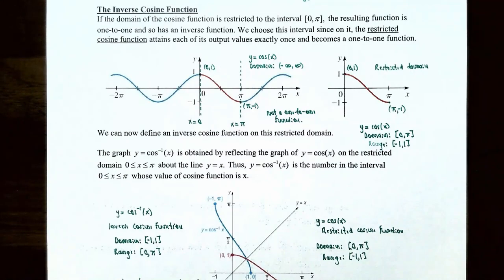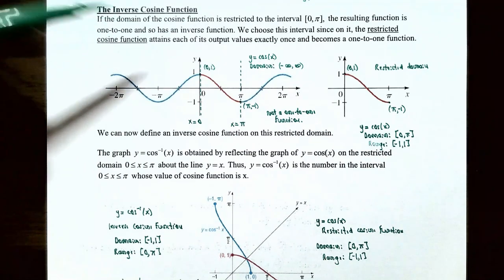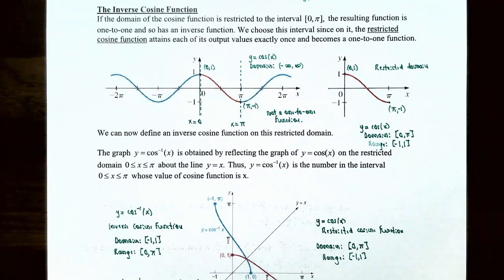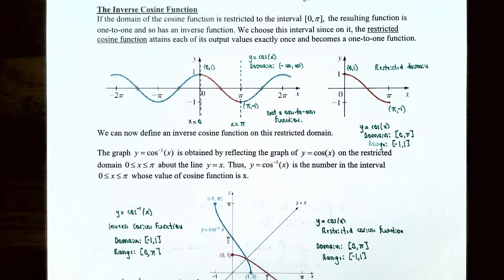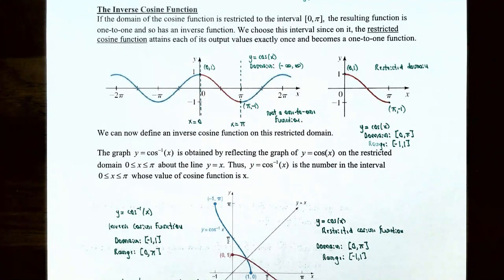Now let's talk about the inverse cosine function. If the domain of the cosine function is restricted to the interval [0, π] including the endpoints, the resulting function is a one-to-one function — it passes the horizontal line test — so there will be an inverse cosine function. We choose this interval because the restricted cosine function obtains each output value exactly once.